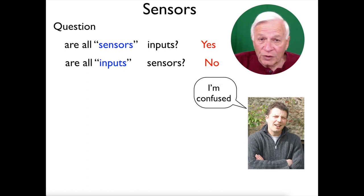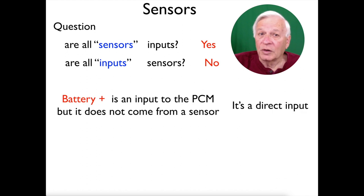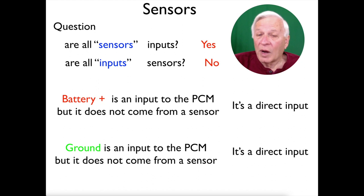Now, feeling a little bit confused? Well, let's look at this a little bit. Battery plus is an input to the PCM, but it does not come from a sensor. It is a direct input and ground is an input to the PCM, but it does not come from the sensor either. It is a direct input as well.